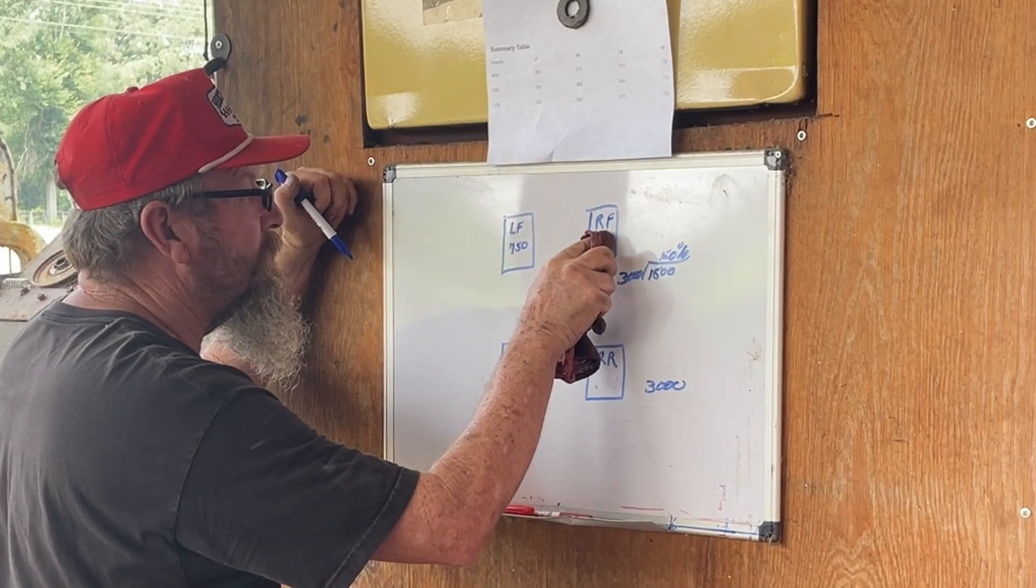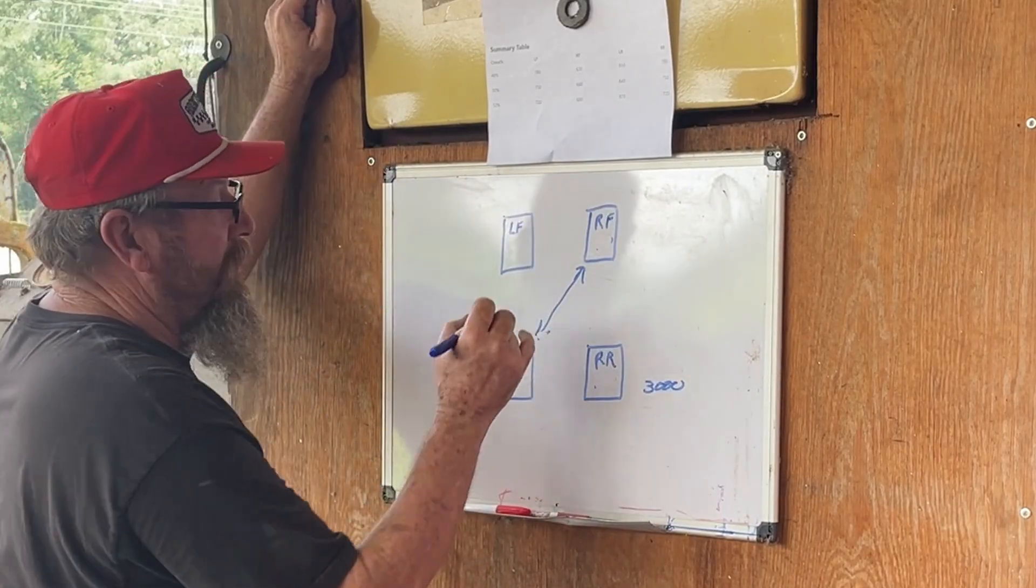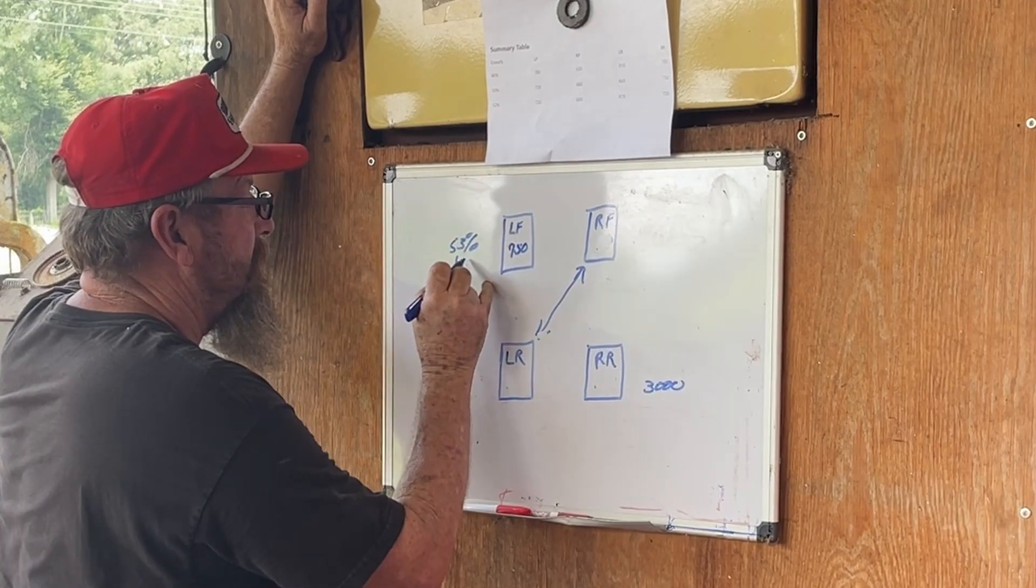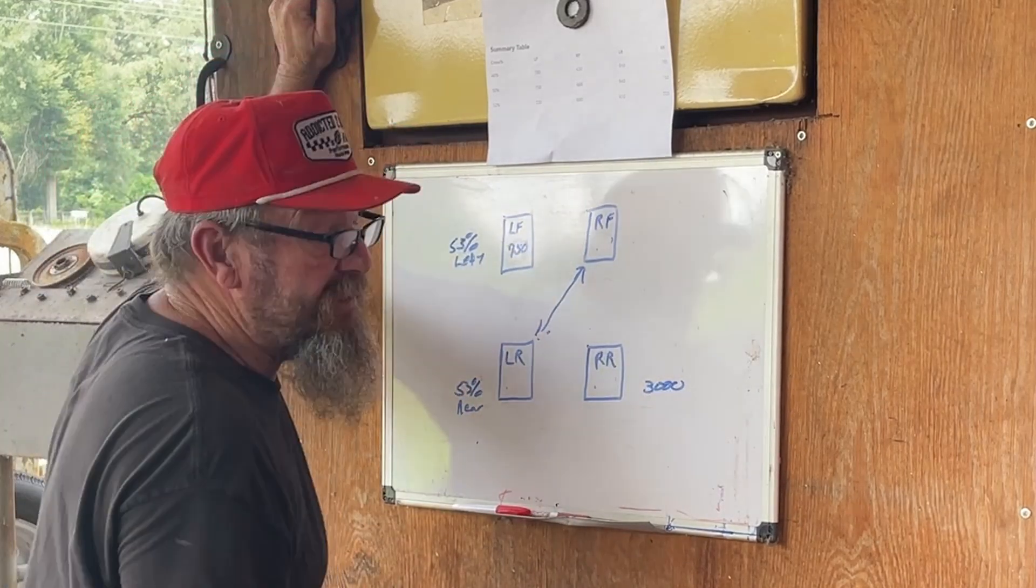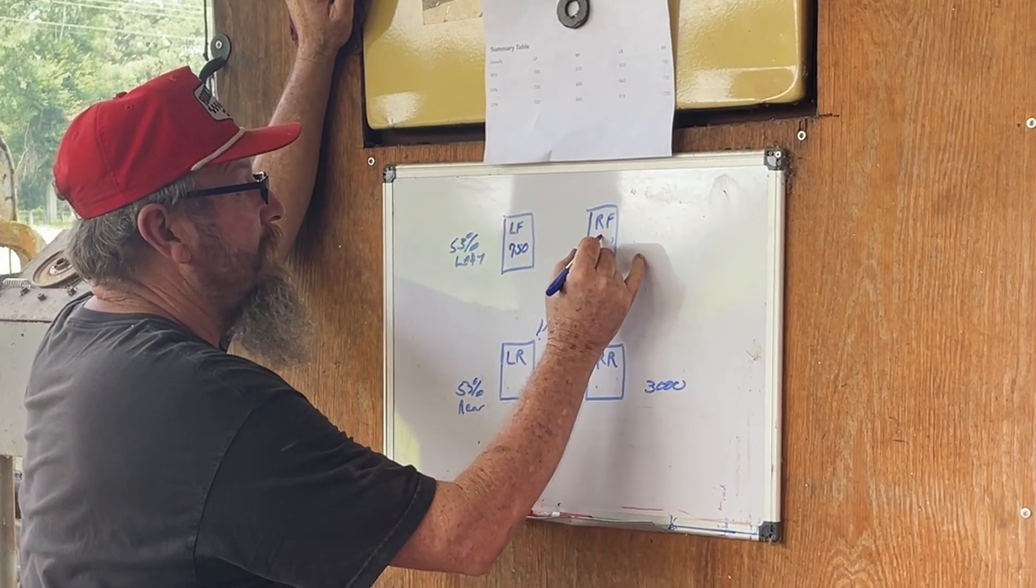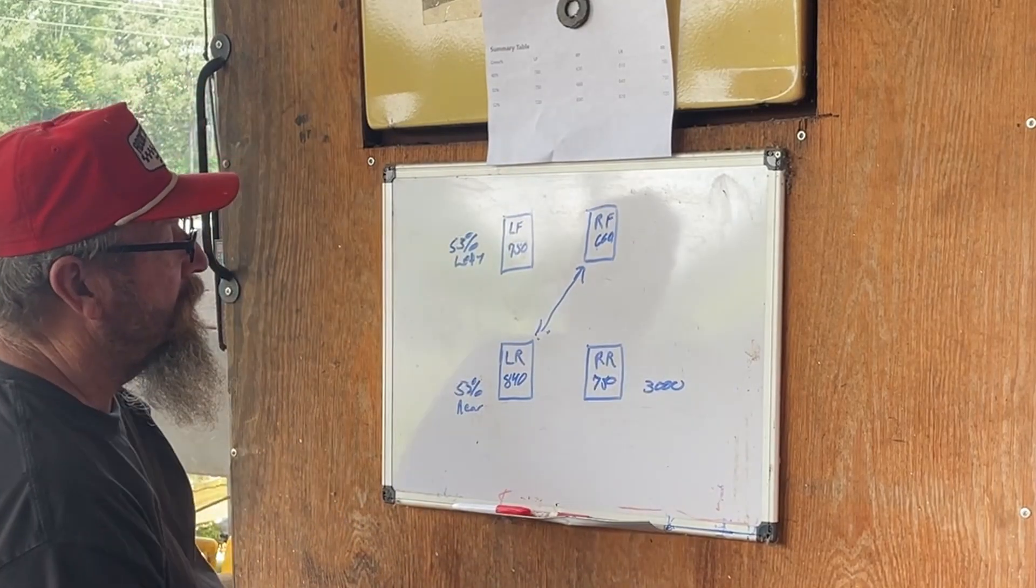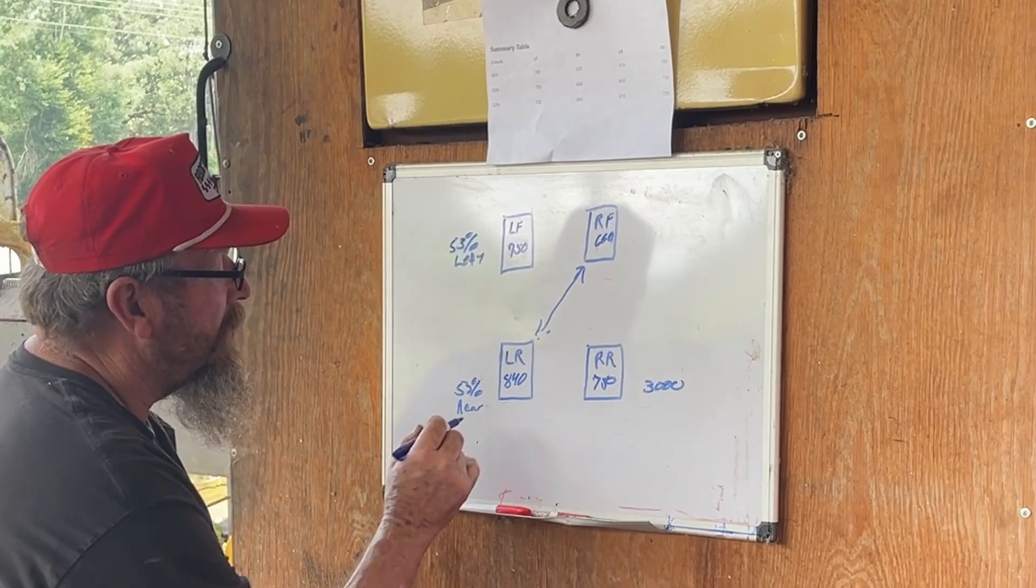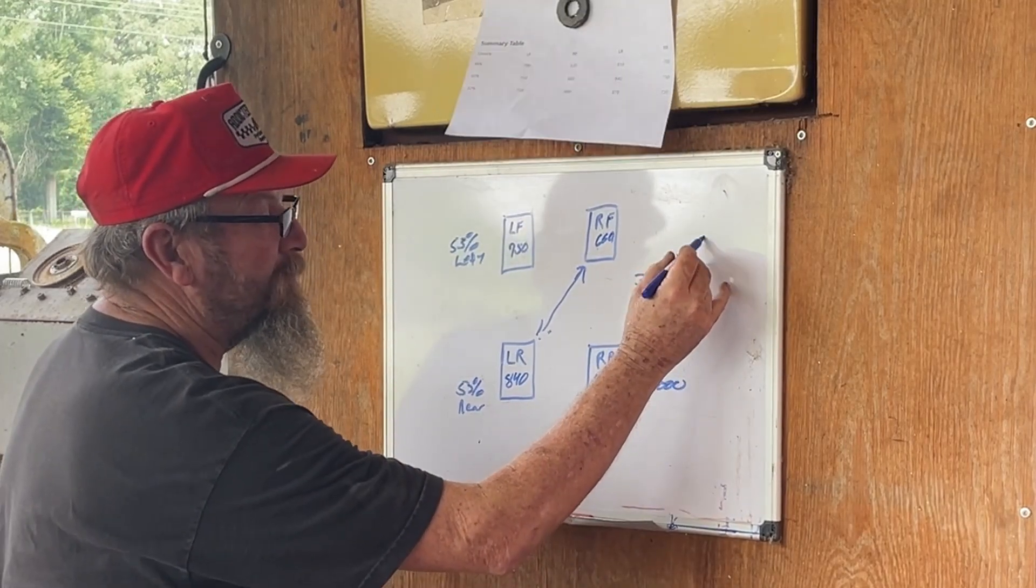Now we're going to do things a little different. We're going to put say this car has 53 percent left side and 53 percent rear, and those are actually decent numbers, something that I would run. This is going to be what it breaks down to. As we gained rear and we gained left, this is still a 50 percent cross weight car. 840 and 660 still adds up to 1,500 pounds, so that's still a 50 percent cross weight car.